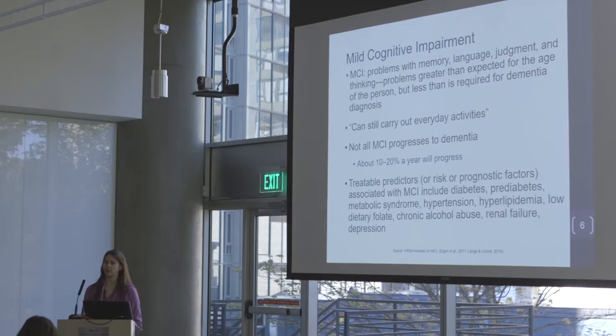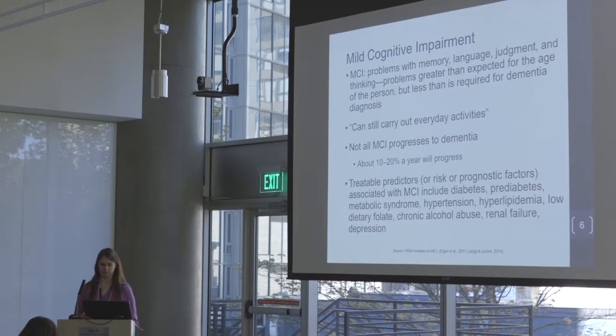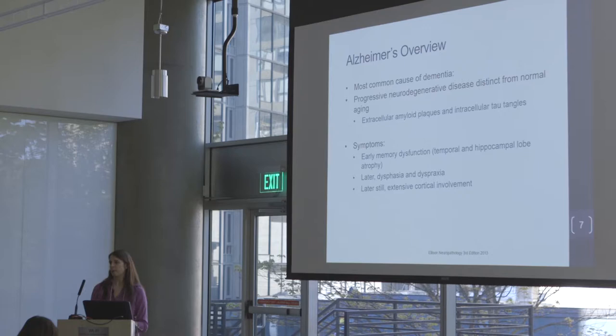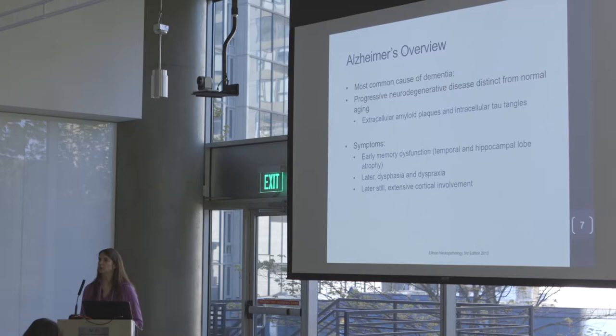There are a lot of treatable predictors — things to look for and optimize so that MCI might turn back into normal cognition. Alzheimer's disease is the most common cause of dementia. It is a progressive neurodegenerative disease, different from normal aging. In theory, the first symptom is usually early memory dysfunction — temporal and hippocampal lobe atrophy — so asking the same question over and over, forgetting where they put their keys.